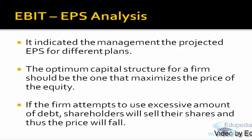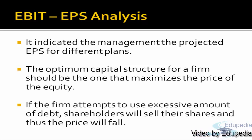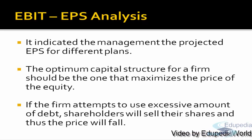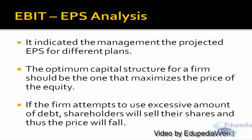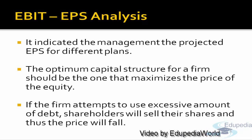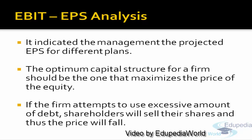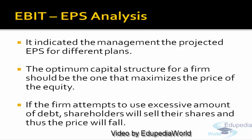An optimal capital structure is the one which can maximize the price of the equity. If a company introduces excessive debt, the equity shareholders — being risk averters — do not like so much risk in the company; they will leave that company. If they do not invest in the company, the market price of the shares will decrease. So the company has to balance between the debt and the equity portion, which will be done by the EBIT and EPS analysis.